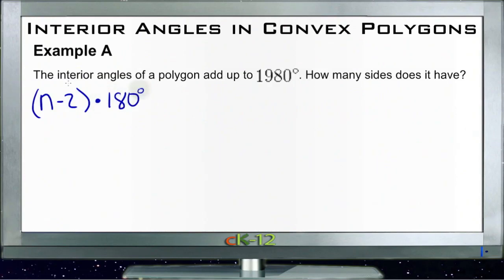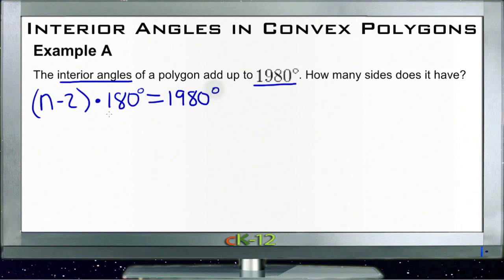So if we take that formula and use 1980 as the output, we can see that what we're looking for is n. In this case n is the thing we don't know — we're trying to figure out what n would be in order for n minus 2 times 180 to equal 1980 degrees. So we first distribute the 180.